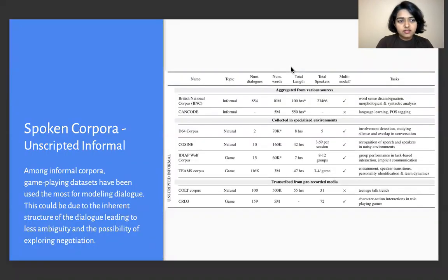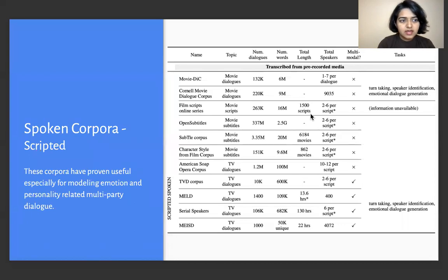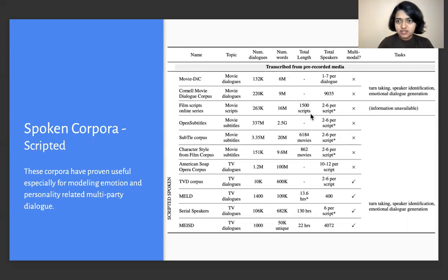For spoken corpora of the unscripted informal subset, we find that game-playing datasets have been used the most for modeling dialogue. This could be due to the inherent structure of the dialogue, which leads to less ambiguity and the possibility of exploring negotiation tasks in a group-based setting. There's also spoken corpora of the scripted subset, which have proven to be especially useful for personality and emotion-related research in multi-party dialogue systems.